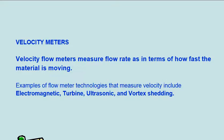Examples of flow meter technologies that measure velocity include electromagnetic, turbine, ultrasonic, and vortex shedding.